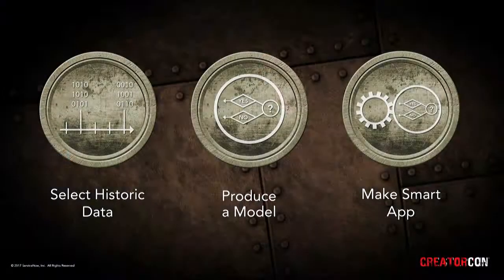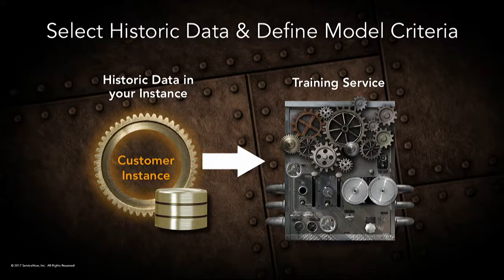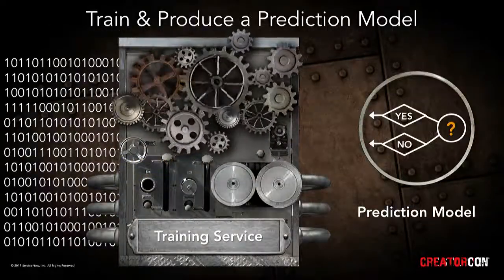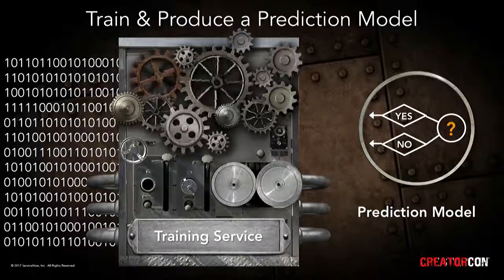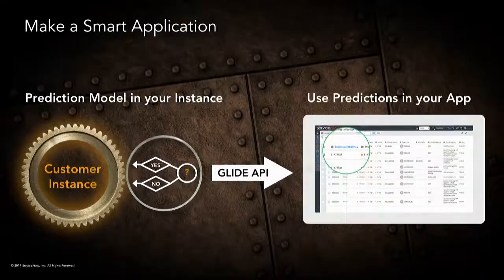We're going to show you how we're going to select historic data using features on the platform. We're going to produce a recommendation model, apply it to an app, and build an app that makes recommendations for the labs you're all going to take next year at K18. What happens is we pull that data out of the instance and put it into our centralized training service. That service stores your data to grind through and produce a predictive model. Once it's done, that data is wiped off the central service — we maintain the multi-instance architecture so your data always lives within your instance.